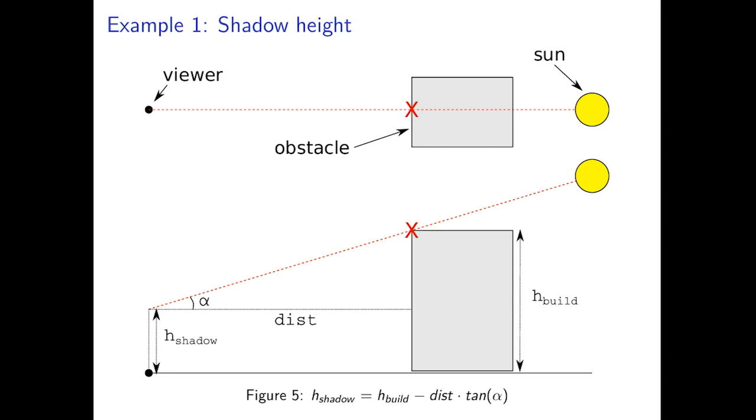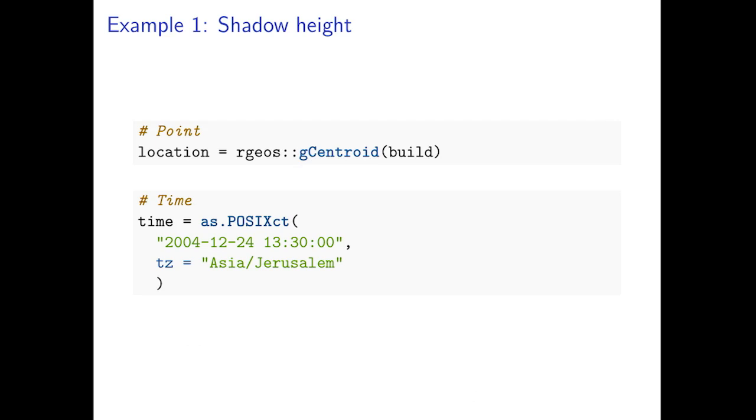Since we also know the obstacles height and their distance, and we know sun elevation angle alpha, we can use this simple trigonometric relation to calculate shadow height. To use this function let us create a sample queried point layer, for example having a single point, the centroid of the buildings layer.